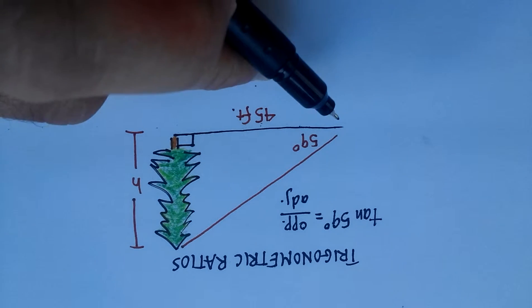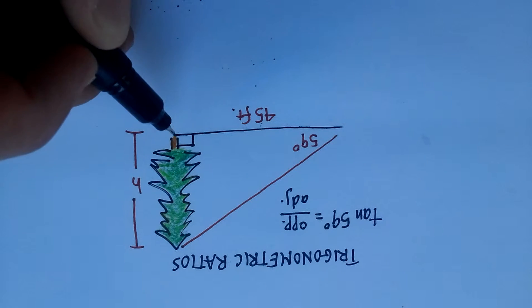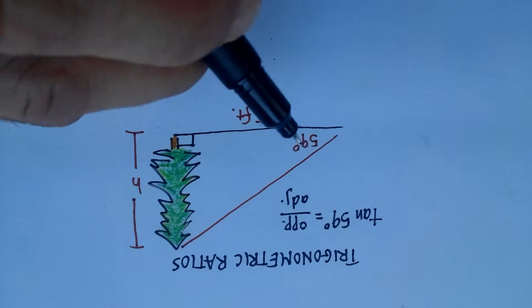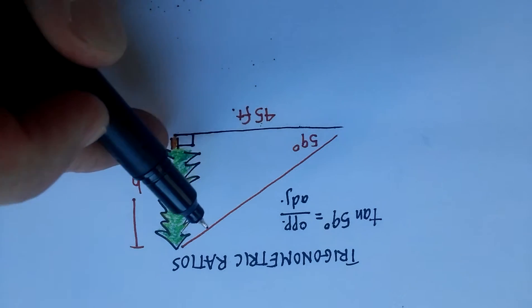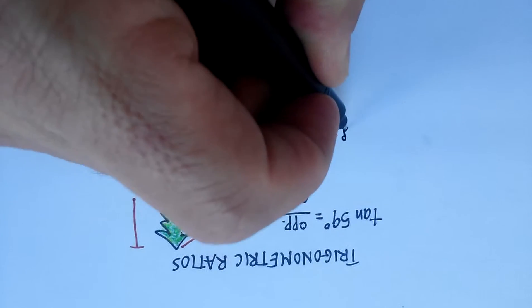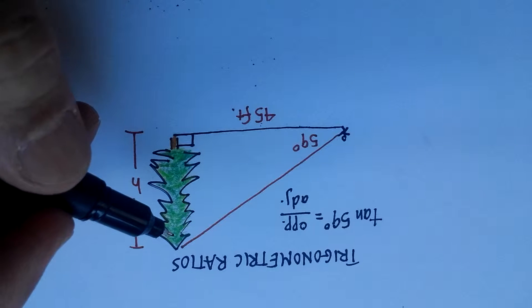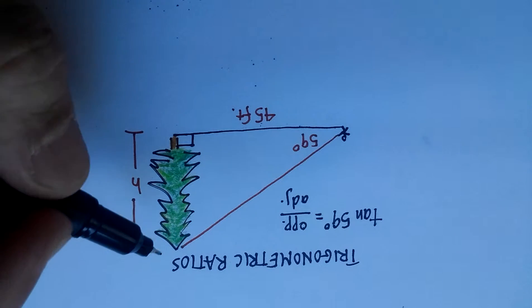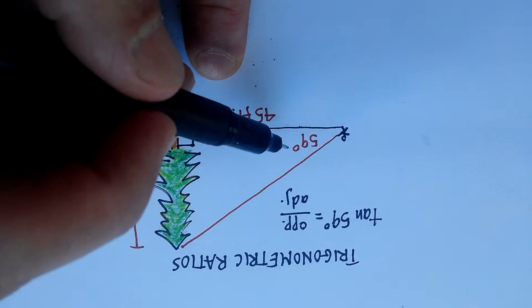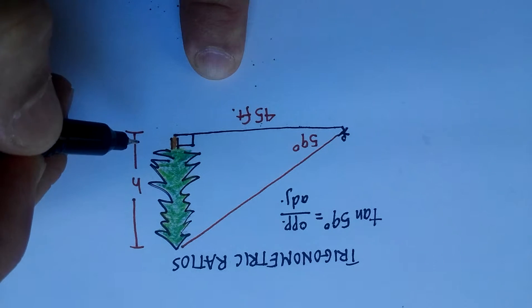We know that we're standing 45 feet away from the base of the tree, and that forms our right angle, assuming level ground. We also have a 59-degree angle from where we're standing to the top of the tree. We're using some kind of clinometer, and we can estimate the height of this tree by using a trigonometric ratio.